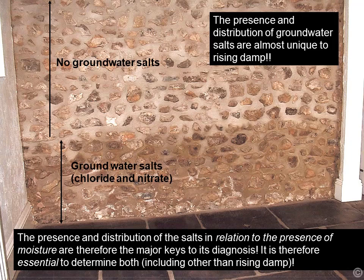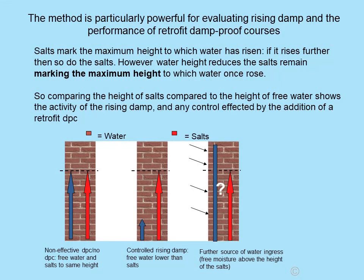We can also use the method for conditions other than rising damp. The method is particularly powerful for evaluating rising damp but especially the performance of retrofit damp proof courses. The salts mark the maximum height to which water has risen — if it rises further, so do the salts. But if the wall dries down, the salts don't move; they remain at the maximum height to which water once rose. So we can use this comparison between free moisture presence and salt presence.